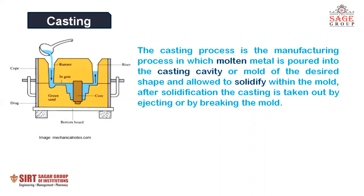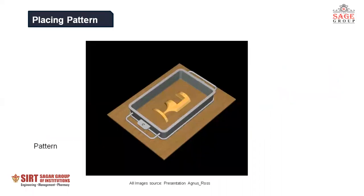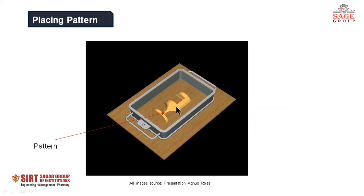In the upcoming slides, we will discuss the casting process step by step. So in the very first step, a pattern is placed into the mold box. You can see this is a pattern — it is placed within the box.